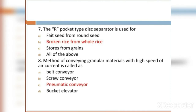MCQ 7: The R (pocket type) disc separator is used for: Option A: flat seed from round seed. Option B: broken rice from whole rice. Option C: stones from grain. Option D: all of the above. The right answer is broken rice from whole rice.